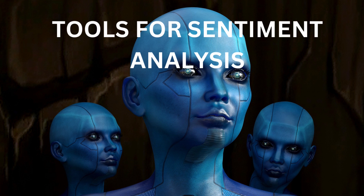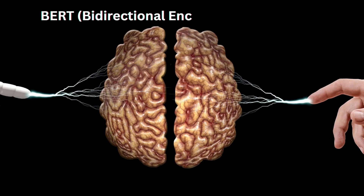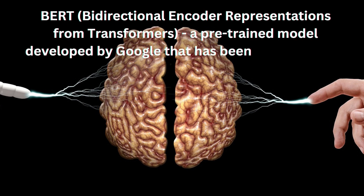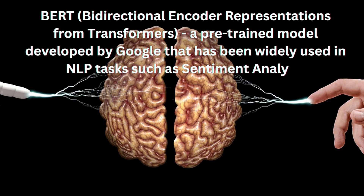Some popular tools include BERT, bi-directional encoder representations from transformers, a pre-trained model developed by Google that has been widely used in NLP tasks such as sentiment analysis, and NLTK, natural language toolkit.